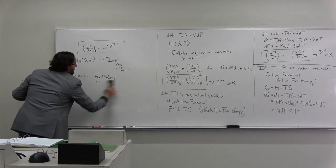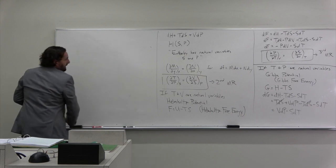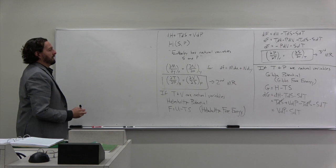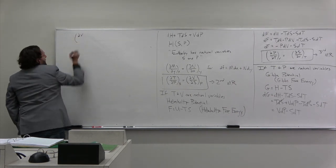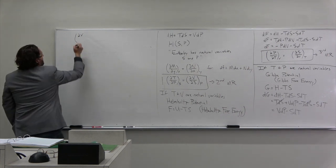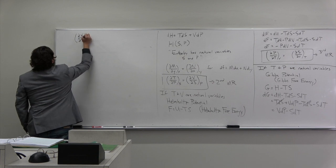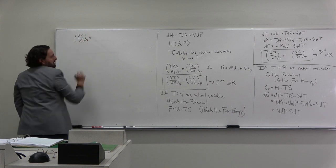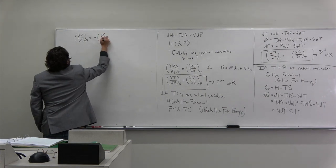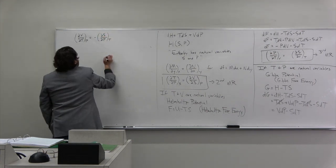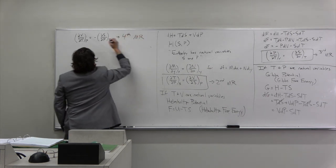Comparing with our compatibility equation for dG equals V dP minus S dT, the fourth Maxwell relation is: partial V partial T at constant P equals minus partial S partial P at constant T.